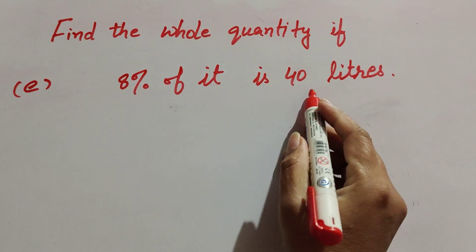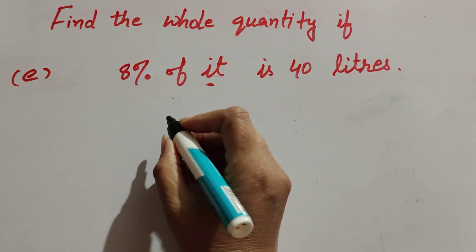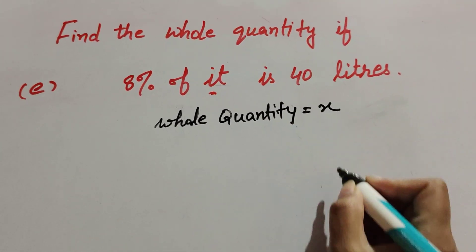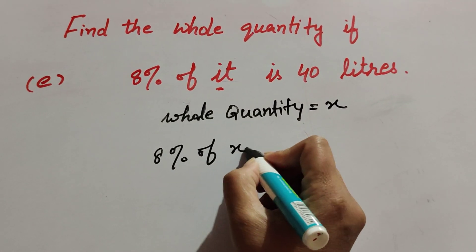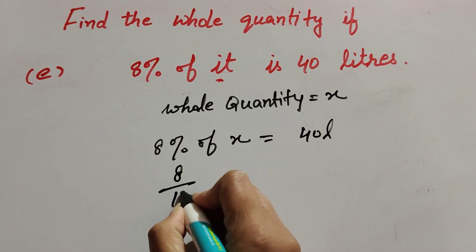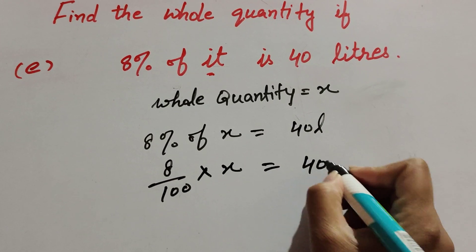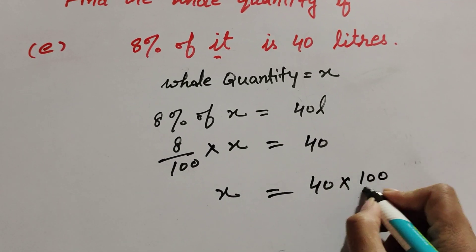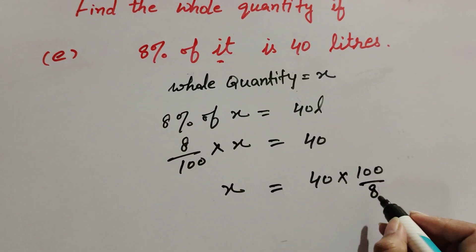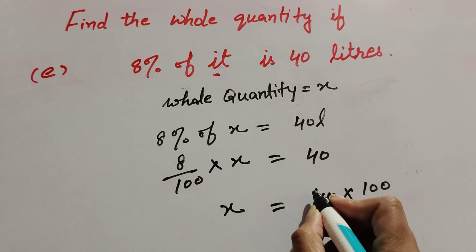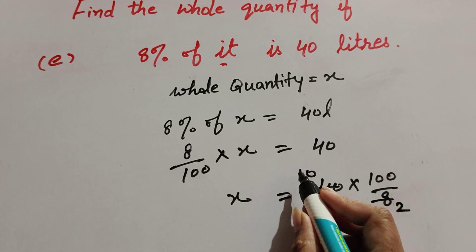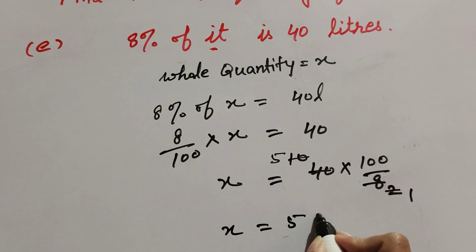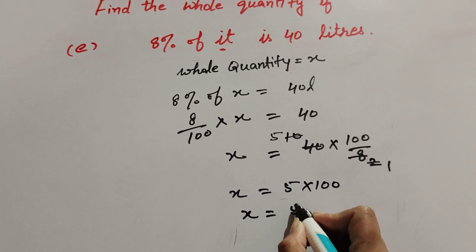Now we move to part e: 8% of it is 40 litres. Here 'it' is the whole quantity, so we suppose whole quantity equals x. So 8% of x equals 40 litres. 8% is 8 over 100, multiply x equals 40. Transposing, we multiply by the reciprocal 100 over 8. 40 and 8 are both divisible by 4 — 4 twos are 8, 4 tens are 40 — giving 10 over 2. Again 2 and 10 are divisible by 2 — 2 ones are 2, 2 fives are 10 — so x equals 5 multiplied by 100.